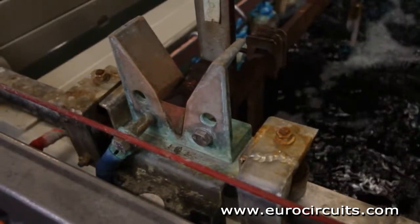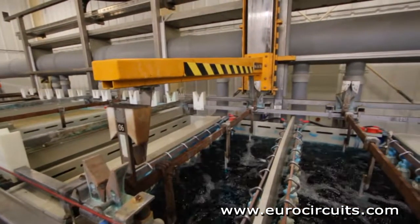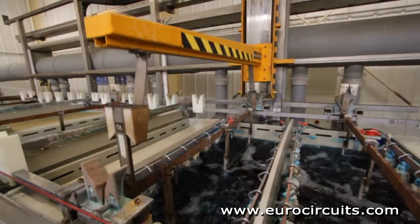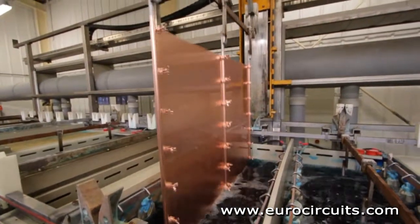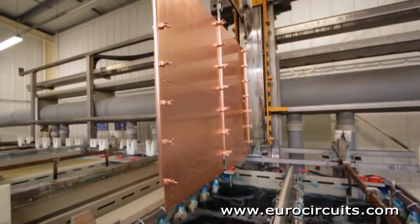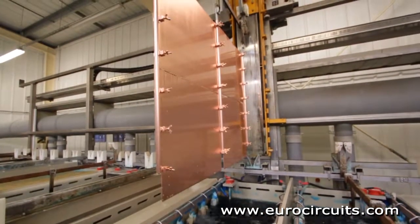Almost all PCBs with two or more copper layers use plated through holes to connect the conductors between the layers. A good connection needs about 25 microns of copper on the walls of the holes.